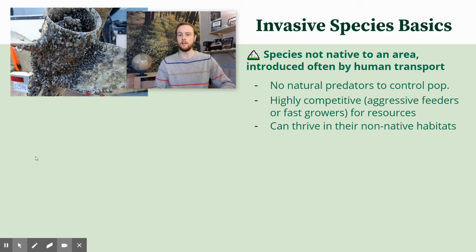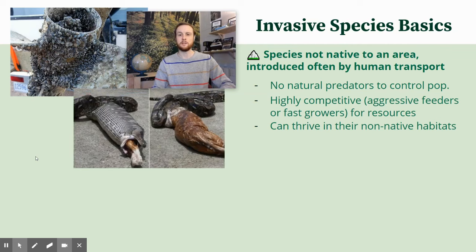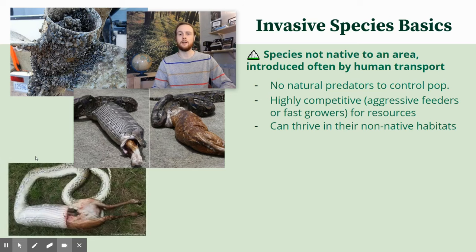Invasives can usually thrive in their non-native habitats because they're very adaptable. Another example is the Burmese python, which was introduced to Florida as part of the exotic animal trade. People had them as pets, then released them. They are eating basically any mammal they can fit their heads around — from deer to household pets like cats, and they've even been seen eating alligators. They're very adaptable and have very aggressive feeding habits.